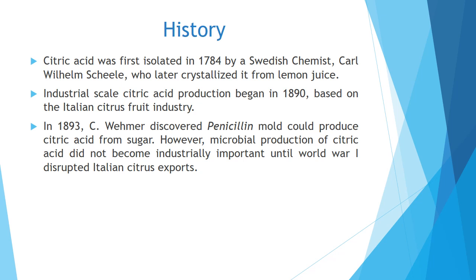Industrial-scale citric acid production began in 1890, based on the Italian citrus fruit industry — Italians were the first to start this production using citrus fruits. Later in 1893, Wimmer discovered that penicillin mold could produce citric acid from sugars, especially sucrose. However, the microbial production of citric acid did not become industrially important until World War One disrupted Italian citrus exports.